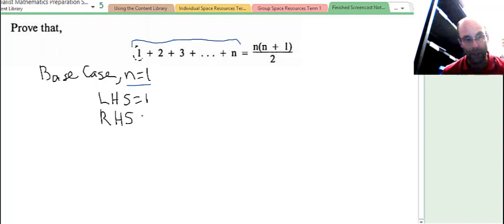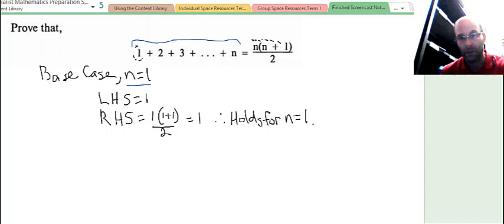The right hand side, well we have that expression, so we need to substitute 1 into that expression. So wherever there's an n, we need to sub in 1, so we have 1 times 1 plus 1 in brackets which is 2, all divided by 2. So that's 2 over 2 which equals 1. Therefore it holds for base case for n equals 1.